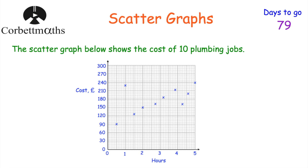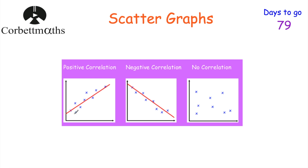Now let's look at correlation. We've got positive correlation — that's as one value goes up, another value goes up. For instance, temperature and ice cream sales: as the temperature goes up, you'd expect more ice creams to be sold, so you'd expect a positive correlation. Next we've got negative correlation — as one value goes up, the other comes down. For instance, temperature and jumpers sold: as temperature increases, you'd expect fewer jumpers to be sold. And finally, we've got no correlation — that's when the points are scattered across the scattergraph and there's no connection between them.